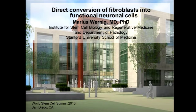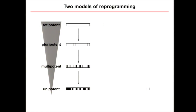Thanks for the kind introduction. Much of directed differentiation or transdifferentiation really started with the discovery of iPS cell reprogramming. One critical insight was that it requires a combination of transcription factors to get the job done well. People had tried single factors for a long time and were successful converting fibroblasts into muscle cells with a single factor, MyoD, but that didn't work for other lineages for a long time.